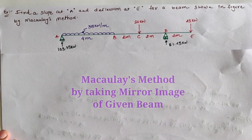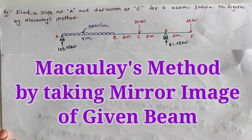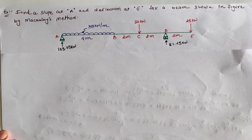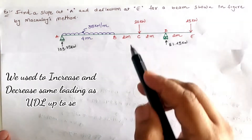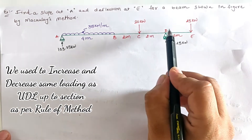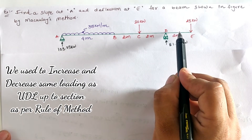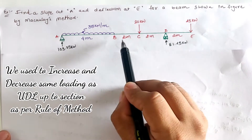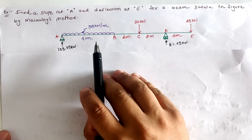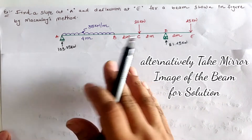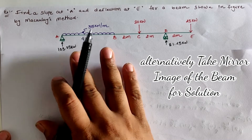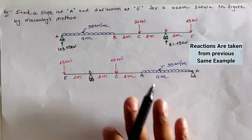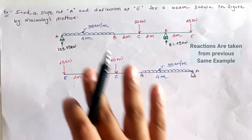Hello friends, today we are going to analyze the same example as we saw in the previous example. In that example we used Macaulay's method where we had to apply a UDL until the section, and the same UDL is applied in the upper direction. But in this example we are going to use a mirror image of the given figure, as shown in the figure.